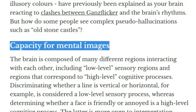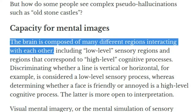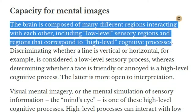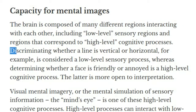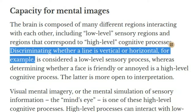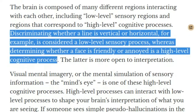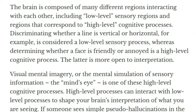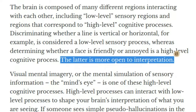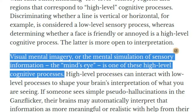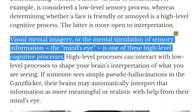Capacity for mental images: the brain is composed of many different regions interacting with each other, including low-level sensory regions and regions that correspond to high-level cognitive processes. Discriminating whether a line is vertical or horizontal, for example, is considered a low-level sensory process, whereas determining whether a face is friendly or annoyed is a high-level cognitive process — the latter is more open to interpretation. Visual mental imagery, or the mental simulation of sensory information — the mind's eye — is one of these high-level cognitive processes.